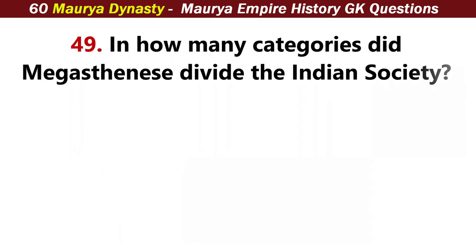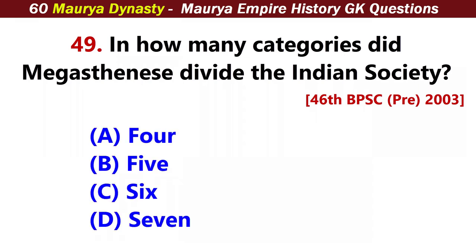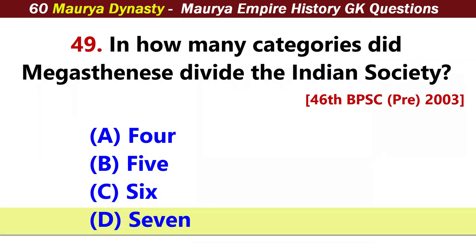In how many categories did Megasthenes divide Indian society? Answer D: Seven.